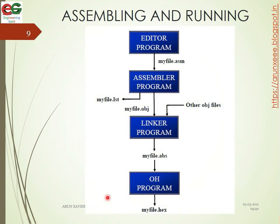To summarize the flow: myfile.asm is fed to the assembler, which produces two files — myfile.obj and myfile.lst. The myfile.obj file is then passed to the linker, which combines object files into an absolute object file.